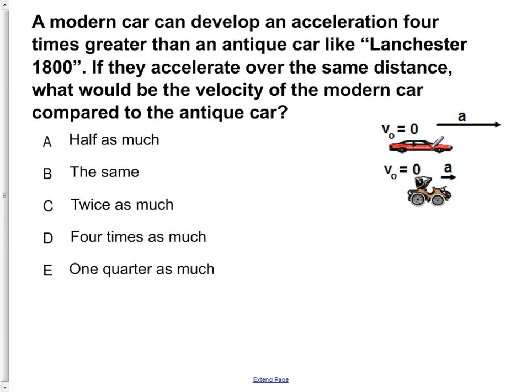From our diagram here, we see that the initial velocity of both the car and the Lanchester are zero meters per second. For the acceleration, we're going to denote the acceleration of the car as aC and the acceleration of the Lanchester as aL. We're also told that the car accelerates at four times the rate of the Lanchester, so we can rewrite aC is equal to four aL.